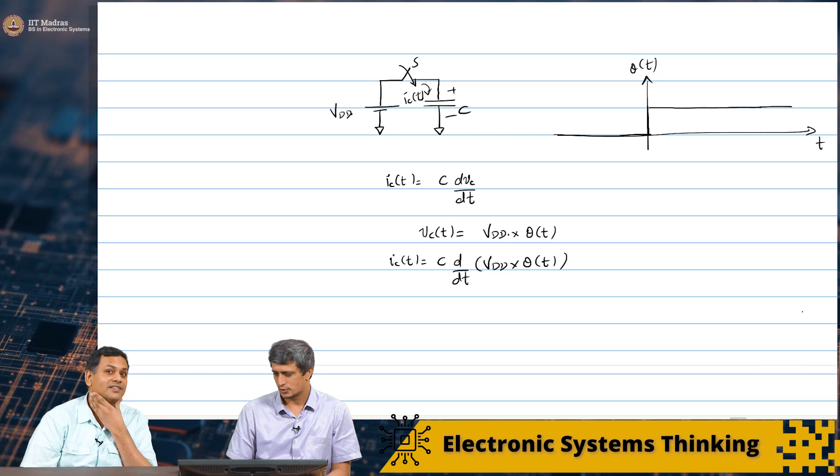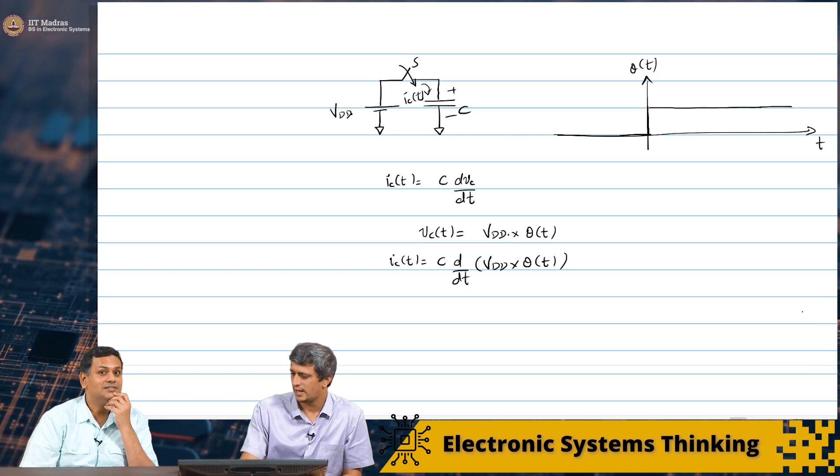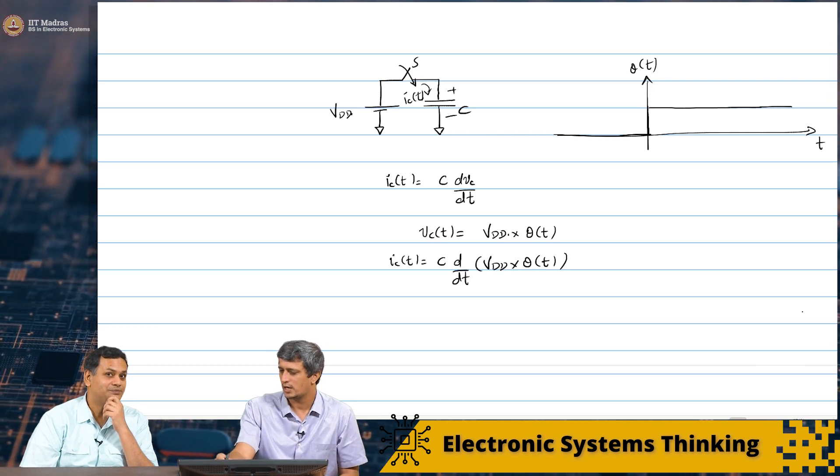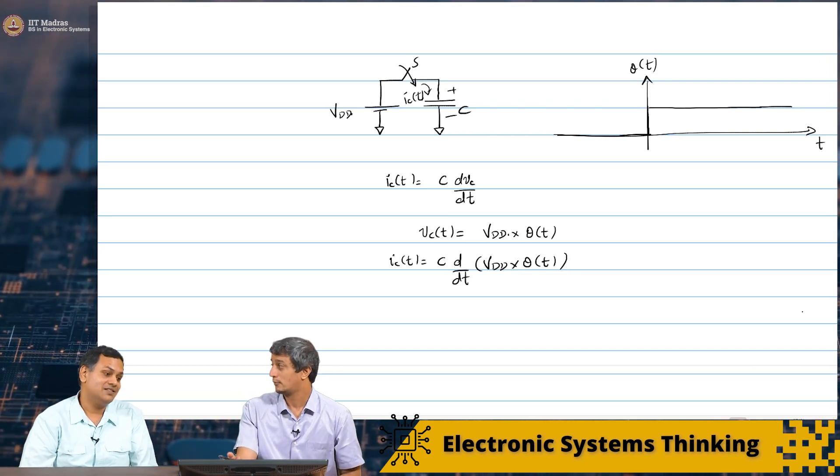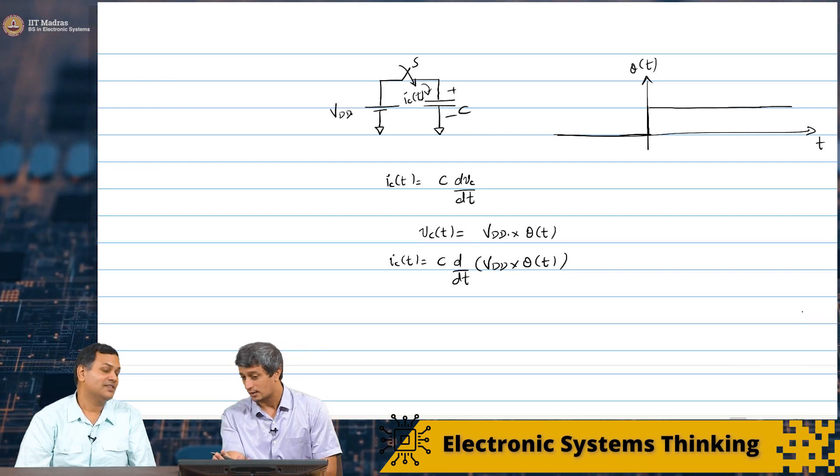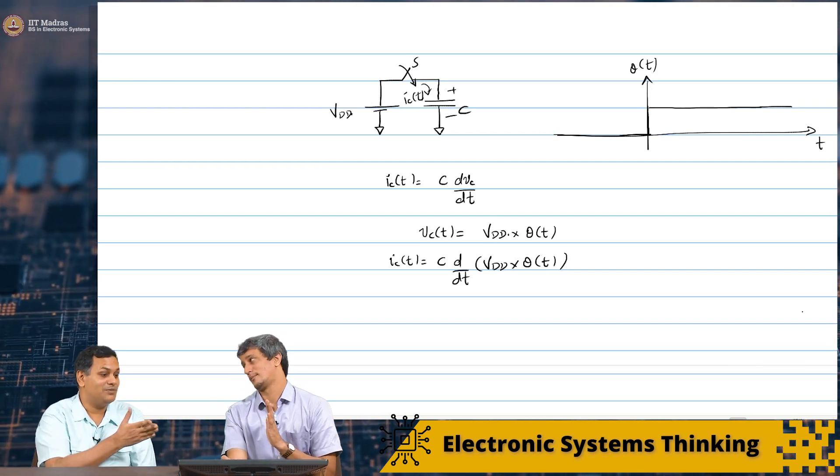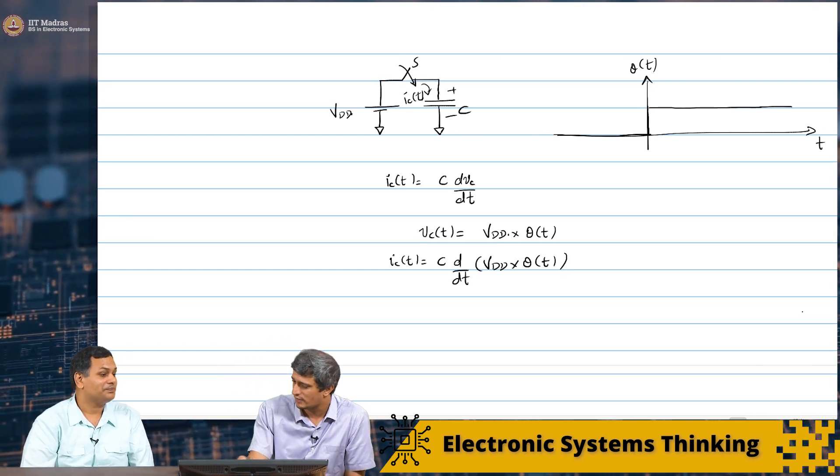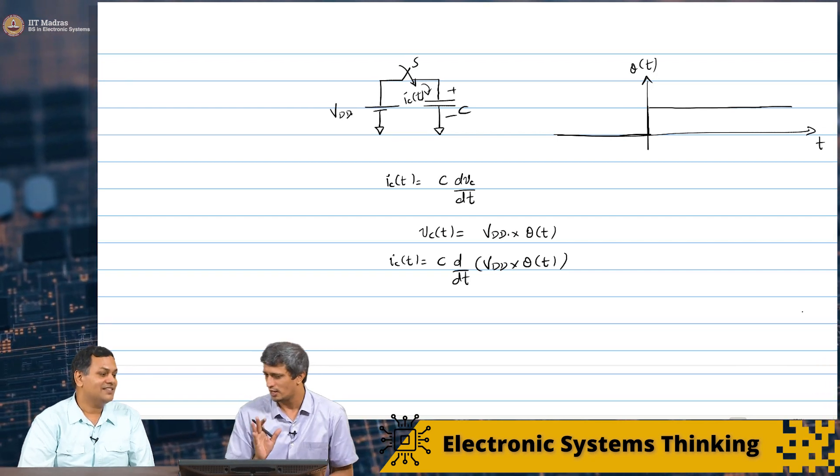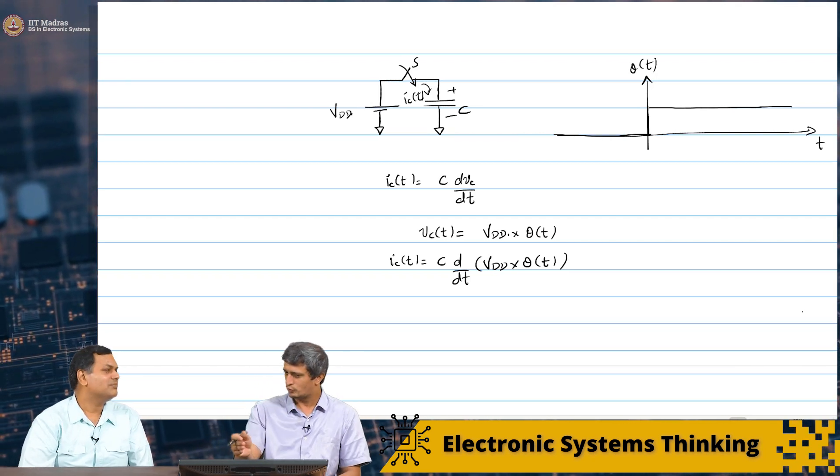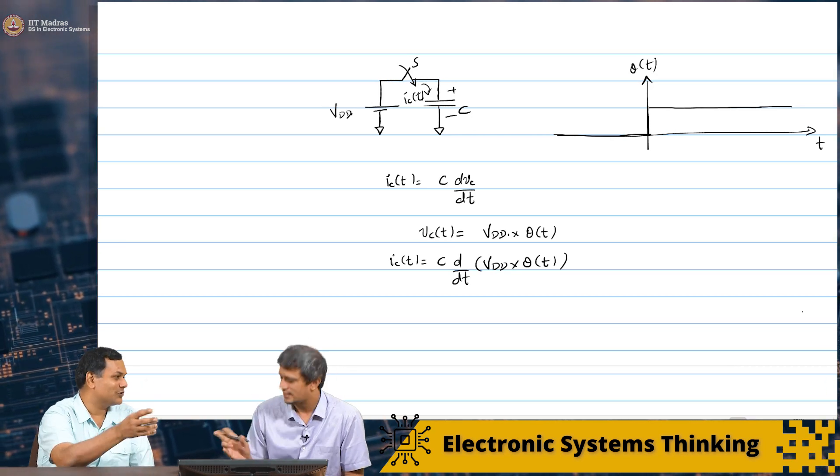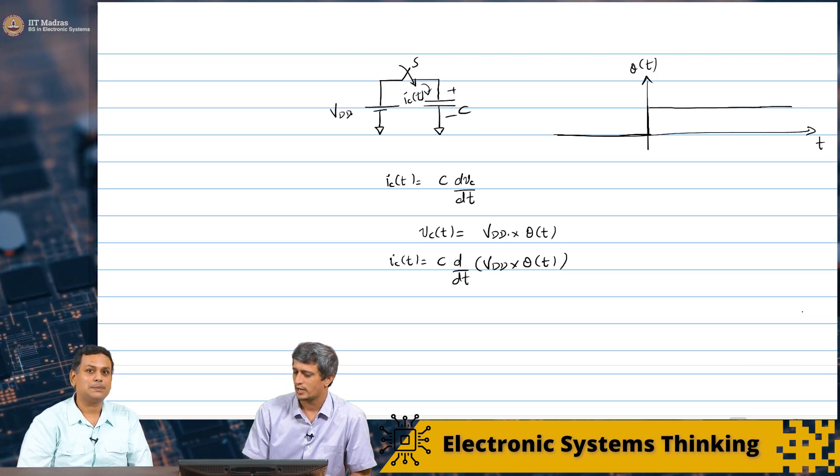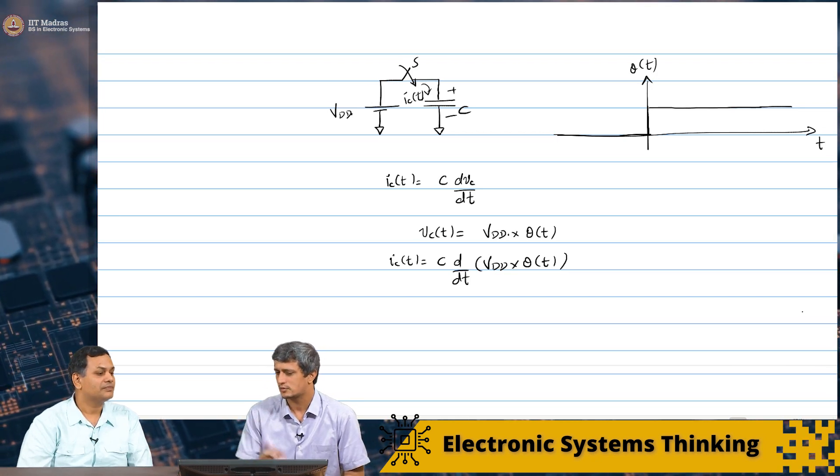So, now what does this mean? Ic of t is going to be C times d by dt of Vdd into theta of t. So, this derivative itself is slightly weird. Yes. Because if you look at the derivative at anything but 0, there is no problem. But if you look at at 0, it actually for an ideal step it is infinity. It is infinity. Right.